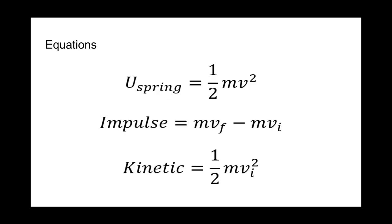These are the equations we used for this problem: the spring potential energy, U_spring, which equals one half times the spring constant times position squared; impulse, which equals the mass times the final velocity minus the mass times the initial velocity; and the kinetic energy equation, which is one half times the mass times the velocity squared.